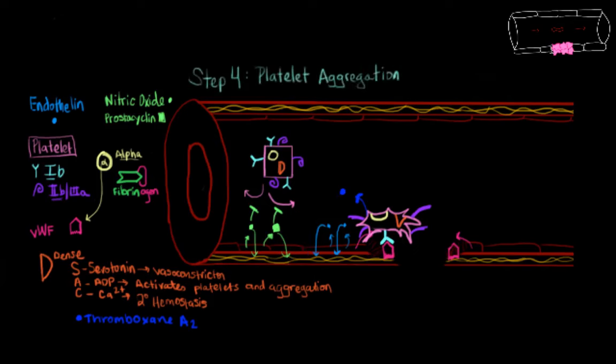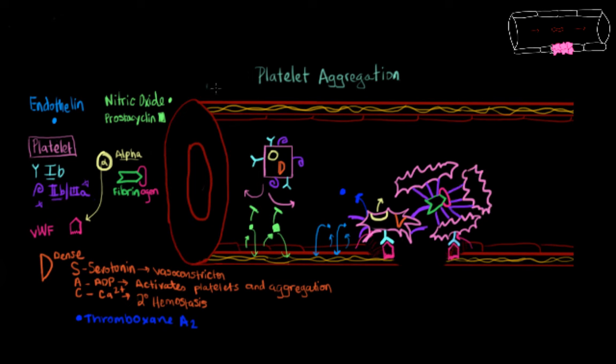And so the final step, platelet aggregation, is mediated primarily through GP2B3A. And it's not until an activated platelet actually causes the 2B3A receptor to change to a shape that allows it to bind fibrinogen. Because 2B3A on the platelet binds fibrinogen, and it's through fibrinogen binding many 2B3A receptors from many platelets that creates the clumping and the platelet plug that we get at the end of primary hemostasis.